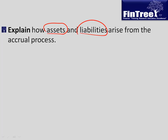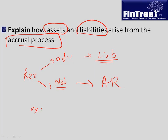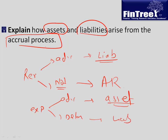How do assets and liabilities arise from the accrual process? If you receive revenue in advance which you have not yet earned, it would be a liability. If you have earned revenue but not yet received it, it would be an asset — we typically call it accounts receivable. If you pay an expense in advance, it would be prepaid expenses, and if you delay payment of expenses, it would be a liability. So because of this accrual system of accounting, we would have some assets and some liabilities.